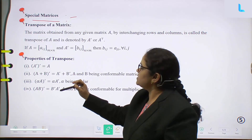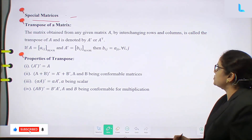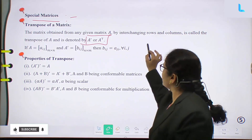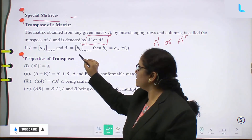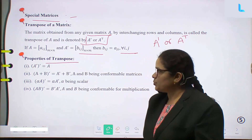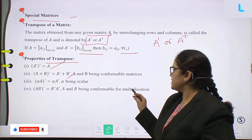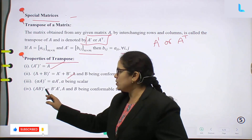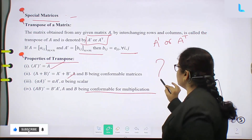Transpose of a matrix: the matrix obtained by interchanging rows and columns of A is called the transpose of A, denoted A' or A^T. If A = [A_ij] of order m×n, then A' = [B_ij] of order n×m where B_ij = A_ji. Properties: (A')' = A; (A+B)' = A' + B'; (αA)' = α·A'; (AB)' = B'·A'.